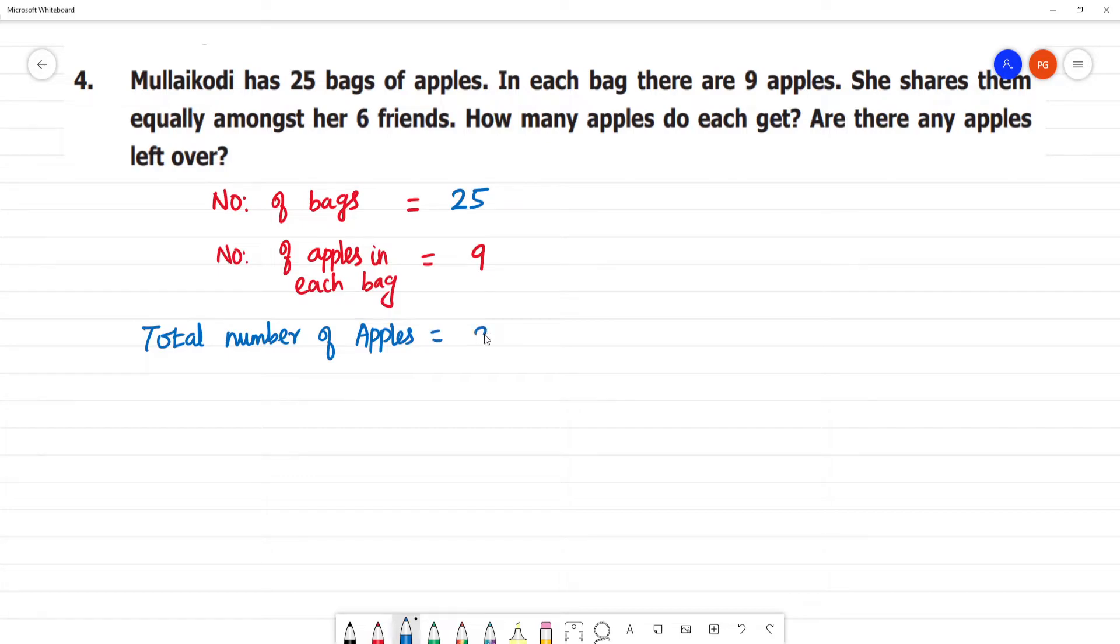Total number of apples is equal to 25 times 9. 9 times 5 is 45, remainder 4. 9 times 2 is 18.